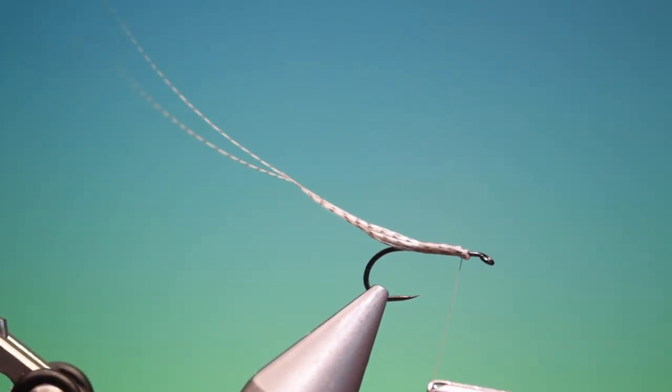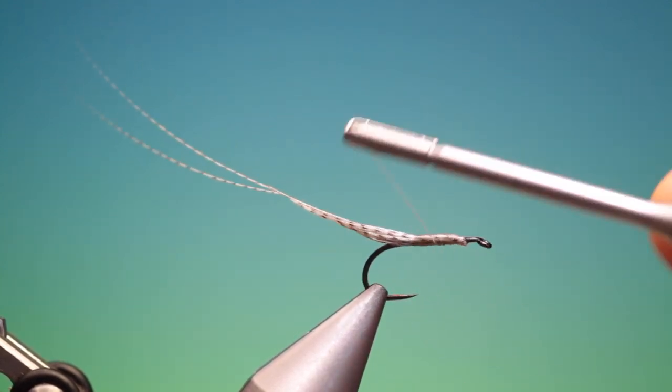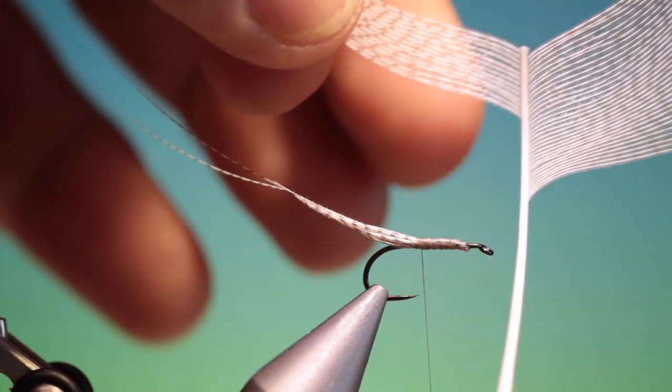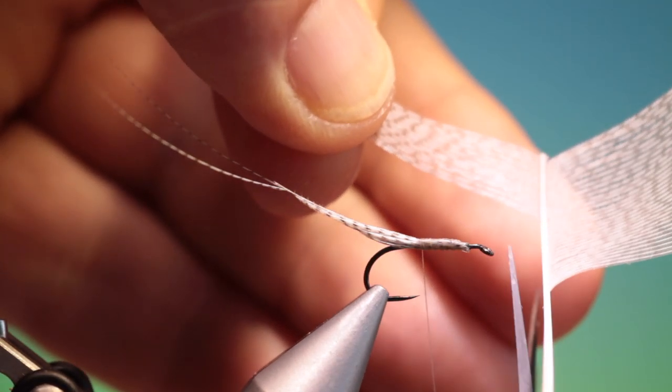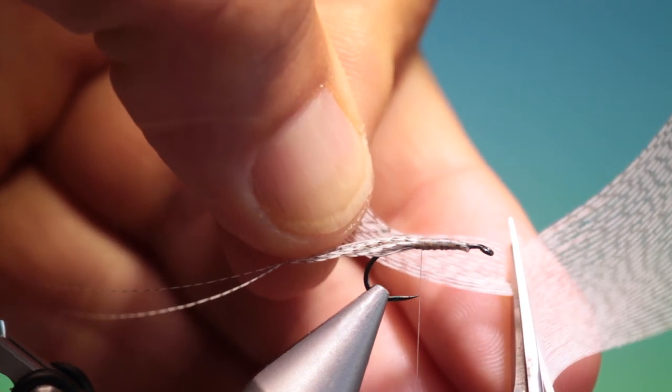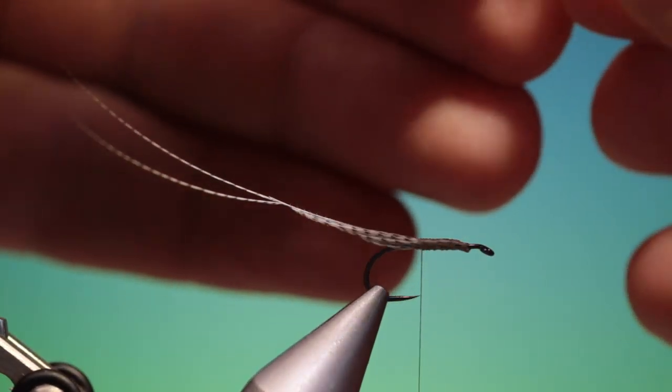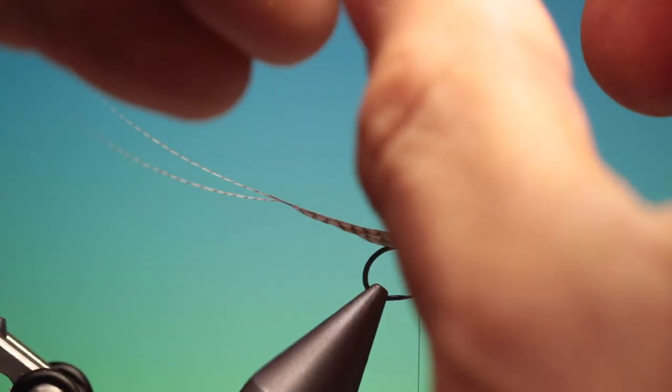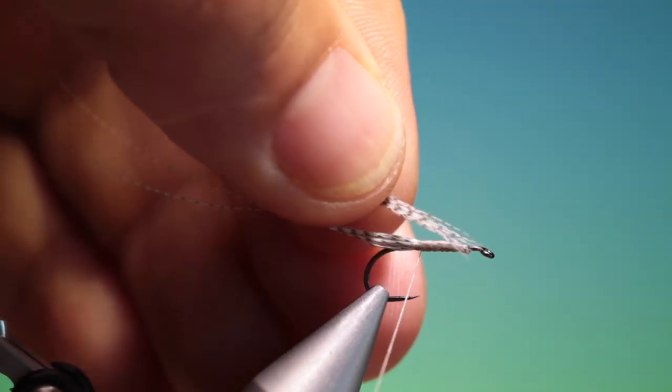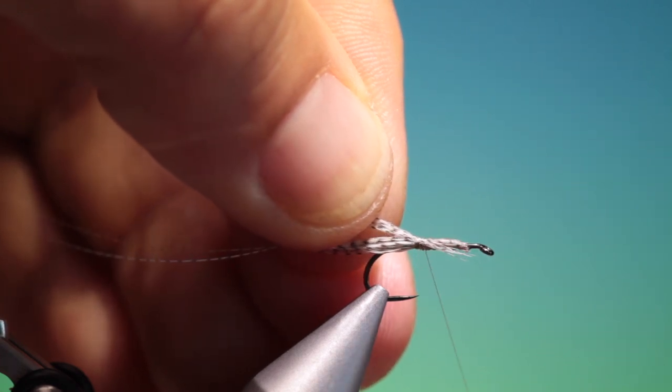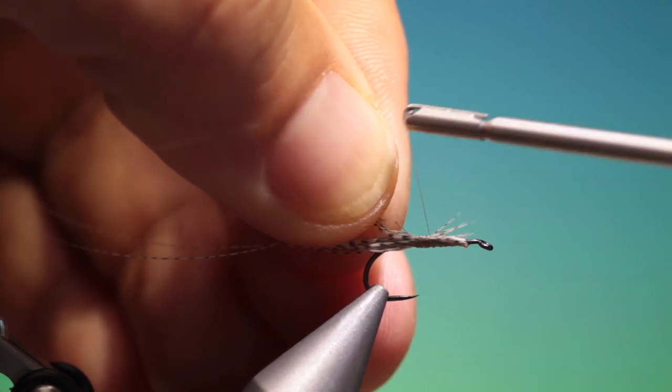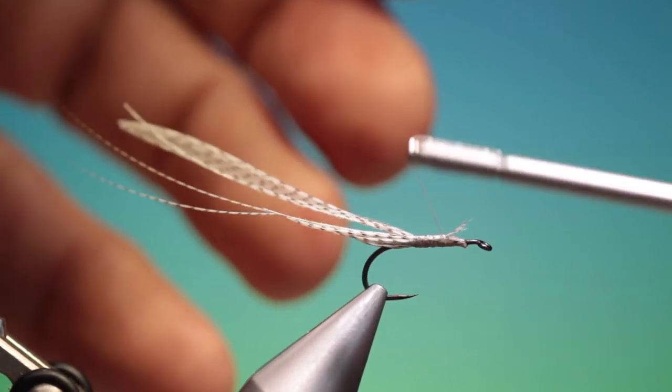Just go over the front there and back here. The bit of the flank feather that you cut off, we can trim off a bunch of fibres there, turn these around and tie them in just at the base of the extended body. Go forward.